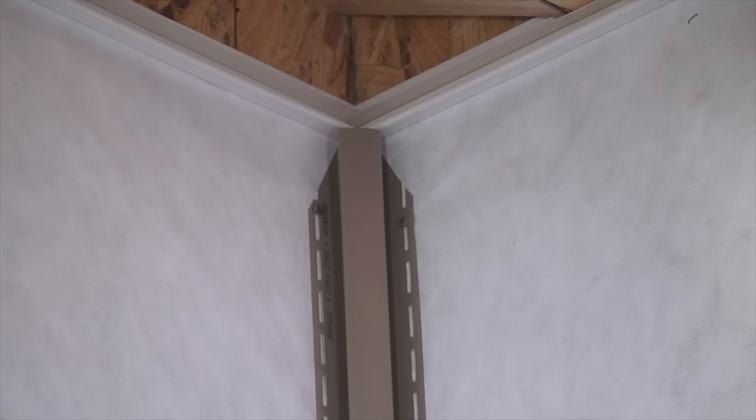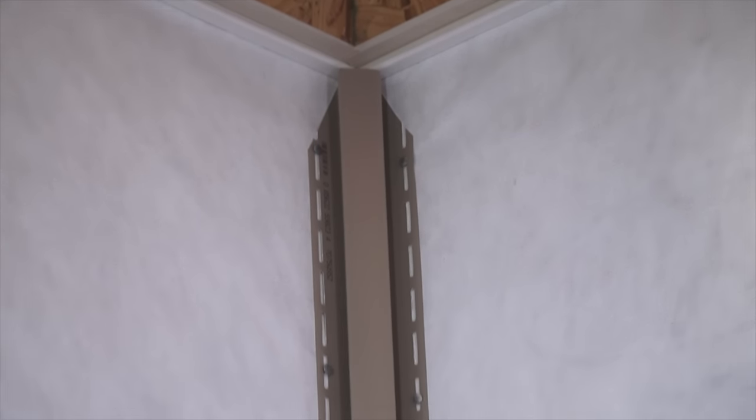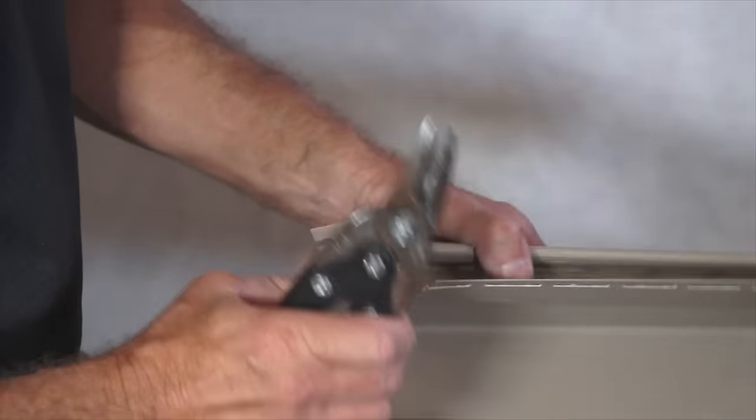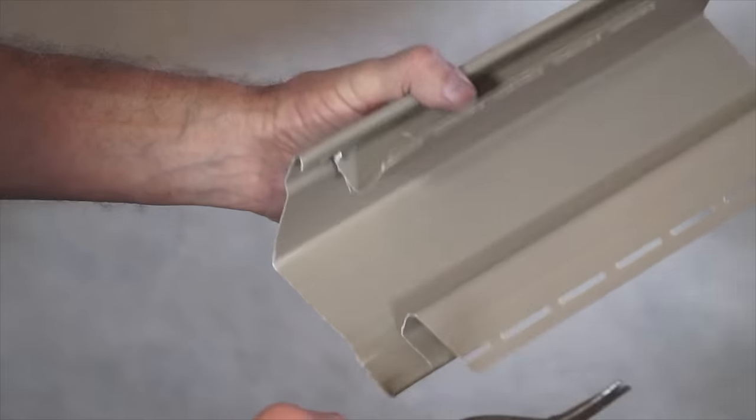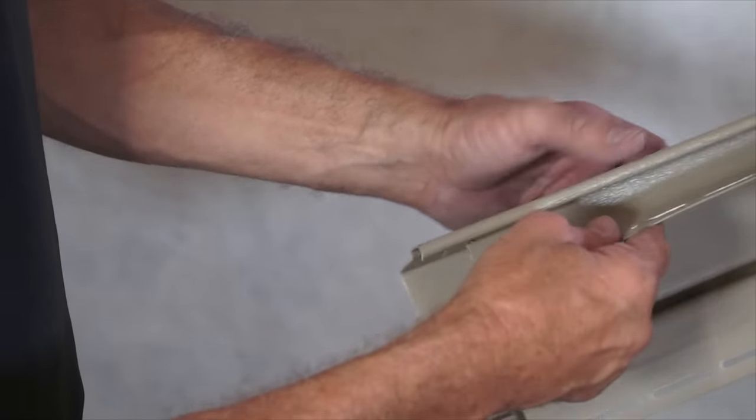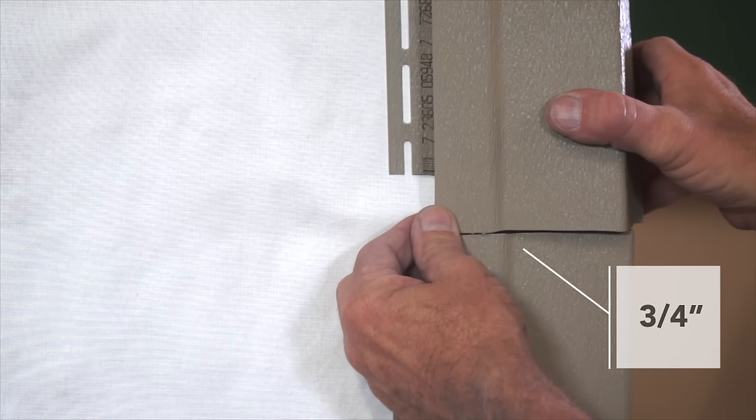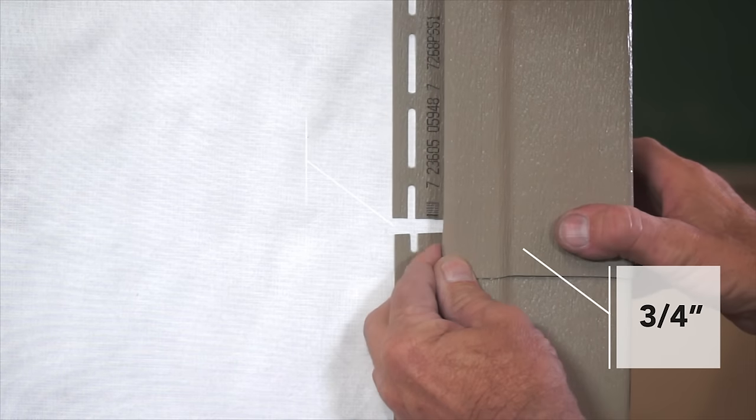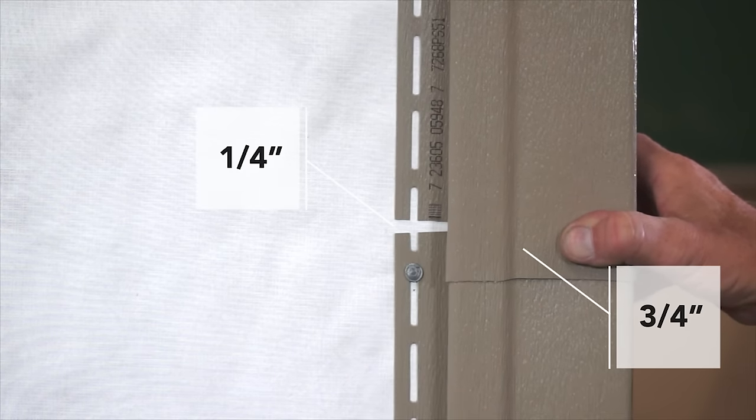Most vinyl siding manufacturers recommend using factory-formed inside corner posts. Other options are to use single or double J channel. If more than one length of corner post is required, cut away 1 inch of the nailing flanges on the top piece. This top piece should overlap the bottom piece by 3/4 of an inch, allowing 1/4 inch for movement.